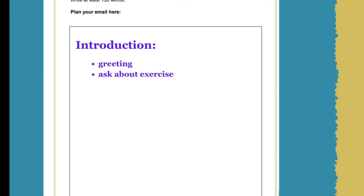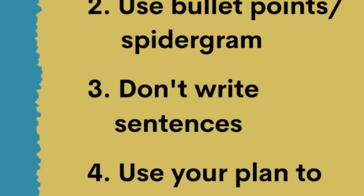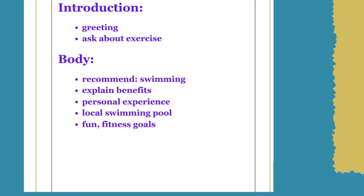Move on to the main part, which is the body. Under that, write all the things you want to include in the main part of your email. For example, recommend swimming — talk about it and explain the benefits. Talk about your personal experiences, mention the local swimming pool you'll recommend, and other things such as fitness goals and how fun it is. Remember: do not write sentences. Just add words and phrases in the plan.